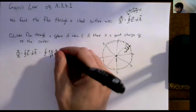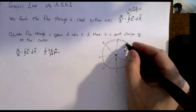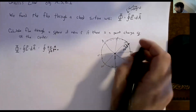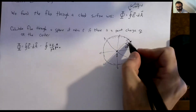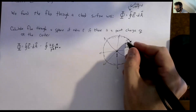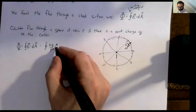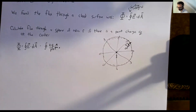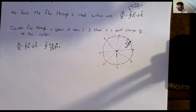We have our electric field, and we want to take the dot product with the area vector. We can notice something very convenient about the direction of the area vector compared with r̂. If I pick any little dA on the sphere and draw the normal to that piece of area, how does that normal vector correspond to the r̂ vector? We're imagining a 3D sphere with a point charge at the center, and we want to figure out how many electric field lines pass through the entire sphere.